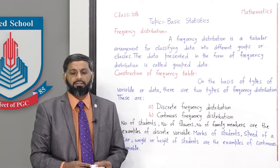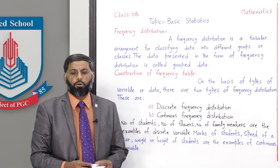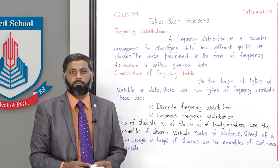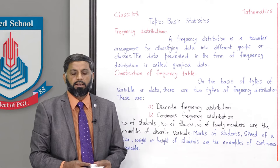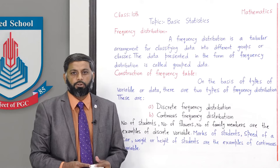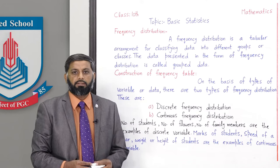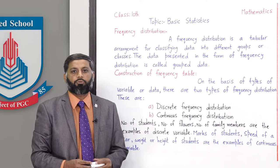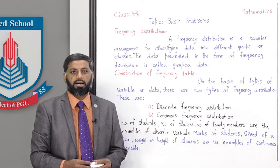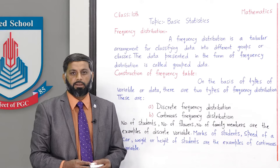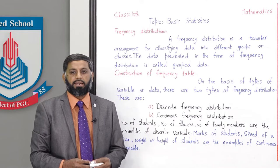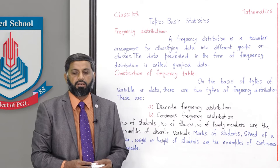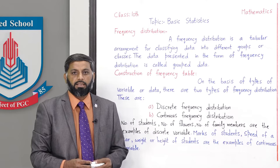Students کے marks decimal میں possible ہوتے ہیں، although انہیں round off کر کے whole number میں کر دیا جاتا ہے۔ Car کی speed 140 km/h بھی ہو سکتی ہے اور 140.5 km/h بھی۔ اسی طرح کسی student کا weight exact 40 kg بھی ہو سکتا ہے اور 40 point something بھی۔ اب discrete اور continuous variable کی frequency distribution بنانے کا طریقہ ہم سمجھیں گے۔